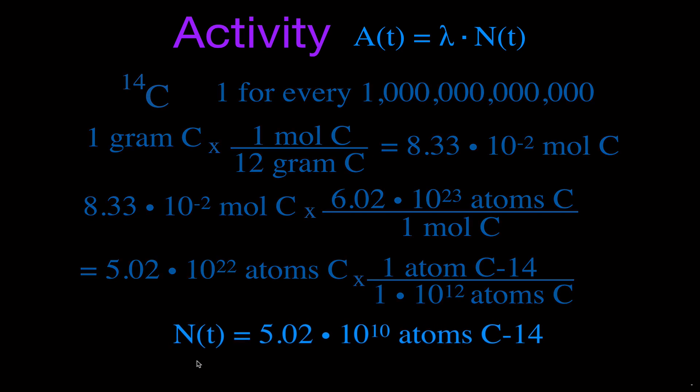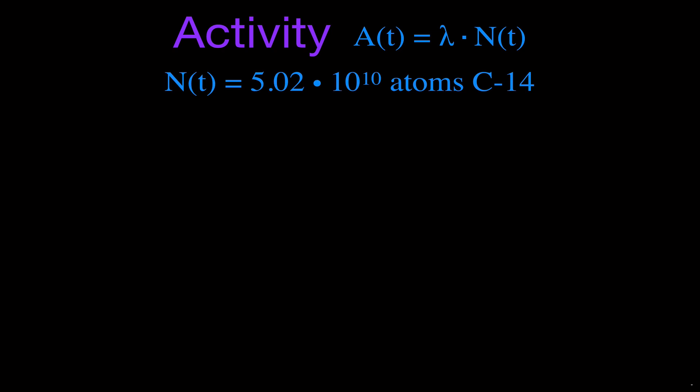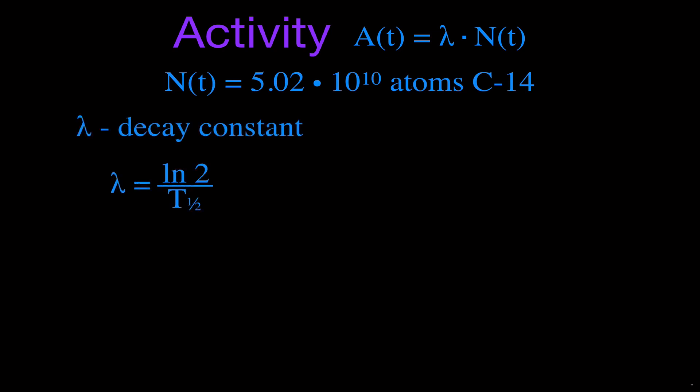Now we have N(t), but we still need the decay constant. The decay constant is calculated as the natural log of 2 divided by the half-life of the radioactive isotope. We're talking about carbon-14, which has a half-life of 5,730 years.